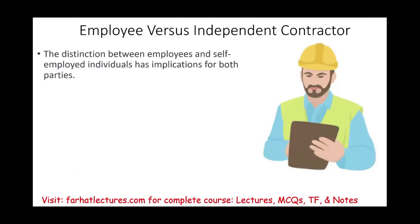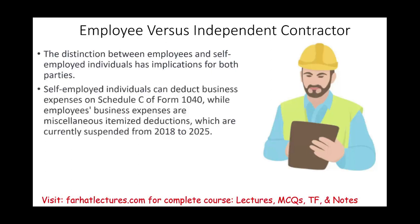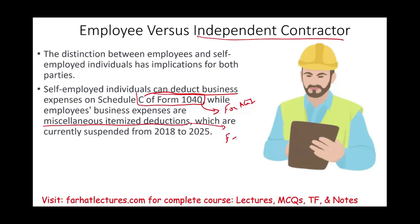Simply put, the distinction has implications for both the business and the individual. If you are considered self-employed, you can deduct those expenses on Schedule C, Form 1040, as business expenses — ordinary and necessary business expenses, which is a deduction for AGI. If you are an employee, you deduct those expenses as miscellaneous itemized deductions from AGI. Between 2018 and 2025, those deductions are suspended — you cannot take them.